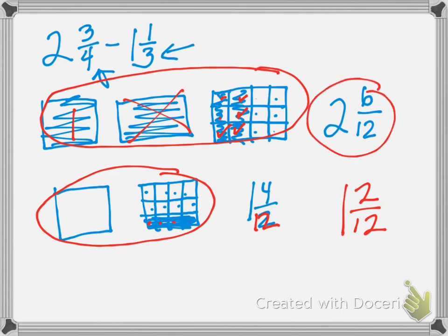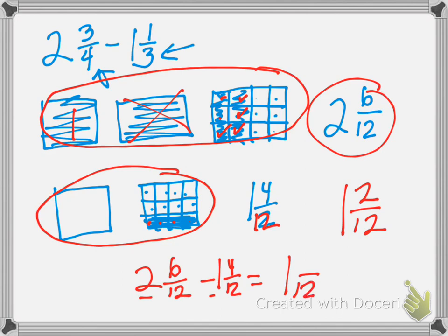We have 2 and 6 twelfths minus 1 and 4 twelfths. If we subtract our whole numbers we have 1, the denominator stays the same, and 6 minus 4 is 2. We can also simplify that — we get 1 and 1 sixth.